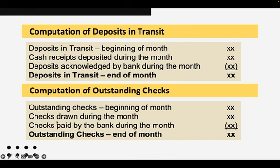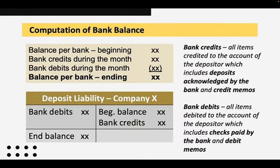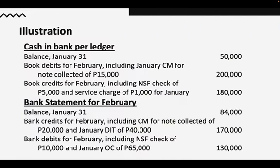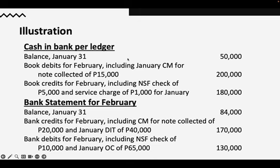Let's practice with an illustration. For the months of January and February, we have information about the cash in bank ledger. The balance on January 31 — the ending balance of the previous month, which is the beginning balance for February — is 50,000. Book debits for February are 200,000, book credits for February are 180,000. For the bank statement: bank balance on January 31 is 84,000; bank credits for February are 170,000; bank debits for February are 130,000.